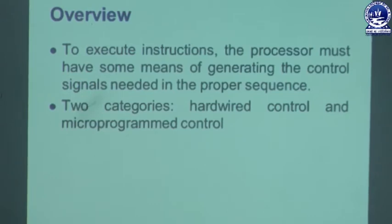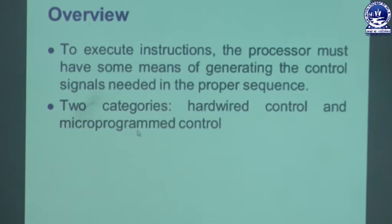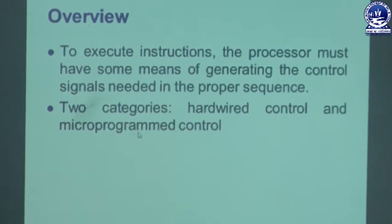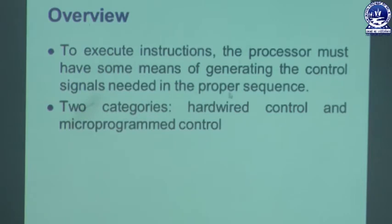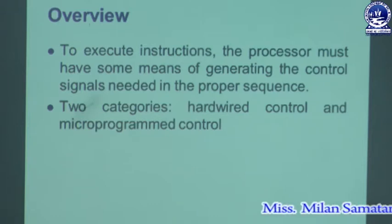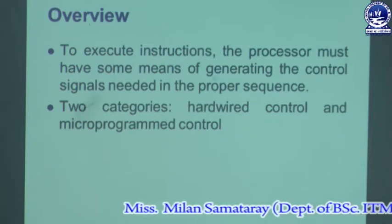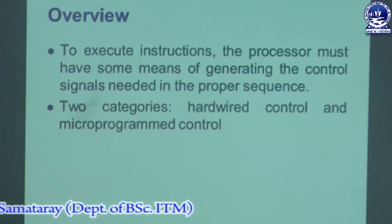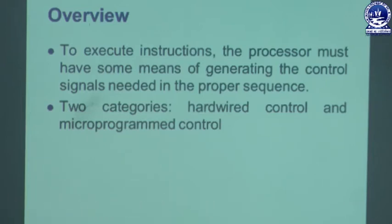We need controls because the control signals are basically needed to control different operations, and they must be in a proper sequence because we cannot activate another register's output signal arbitrarily. We need the control signals in a proper sequence, so we divide these into two categories: hardware control and micro program control.